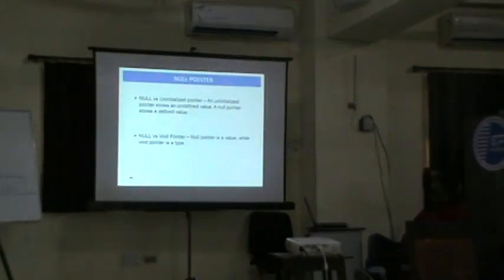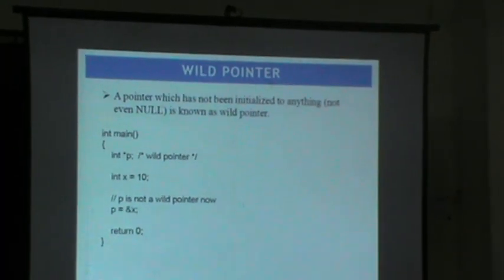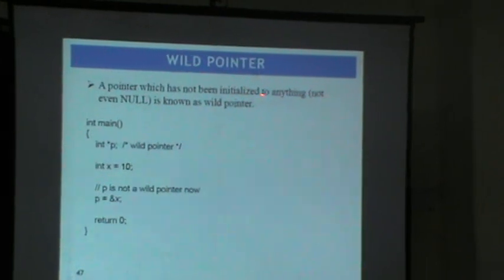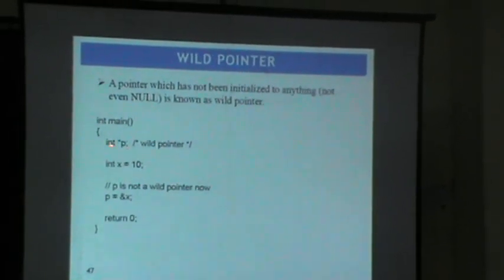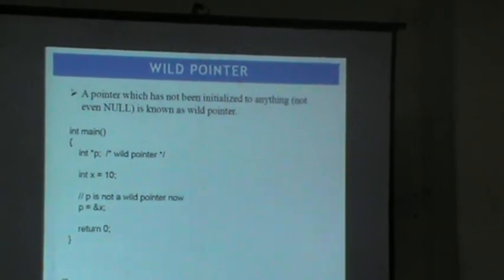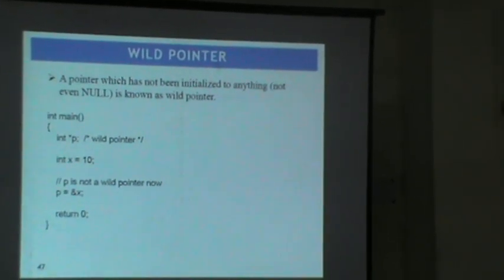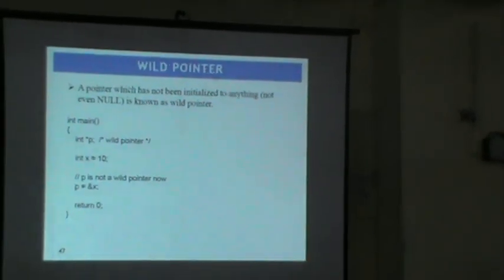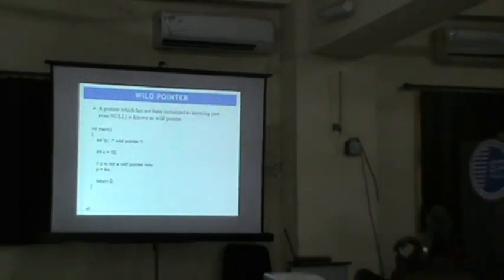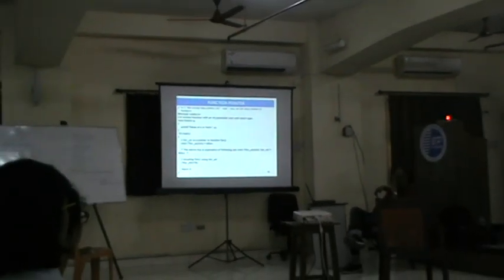There is also another pointer called a wild pointer. A wild pointer is a pointer which has not been initialized to anything. For example, declaring int star P without assigning it anything — that is a wild pointer because it has not been initialized to any value. This is different from null pointer; a wild pointer holds an undefined or garbage address.